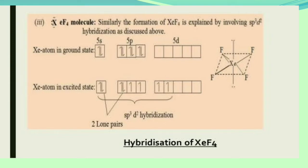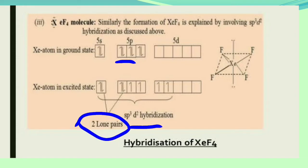The ground state electronic configuration of xenon is 5s2 5p6. When bonded with four fluorine atoms, two electrons are excited to the d orbital, giving formation of 1s, 3p, and 2d orbitals — resulting in sp3d2 hybridization. There are two lone pairs, which occupy positions above and below the plane in the octahedral framework, while the four fluorines are at the corners of a square. According to VSEPR theory, this gives a square planar structure.